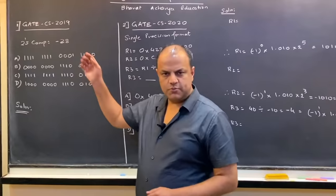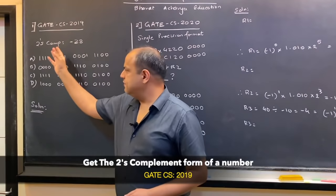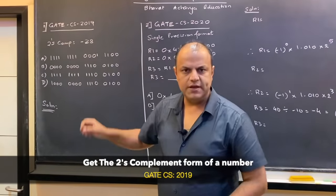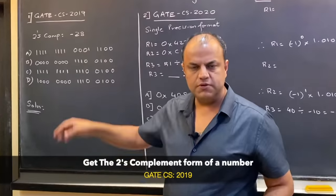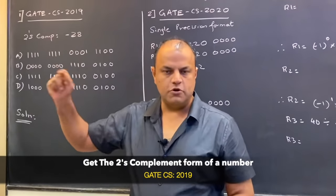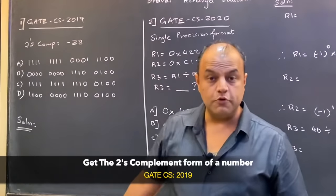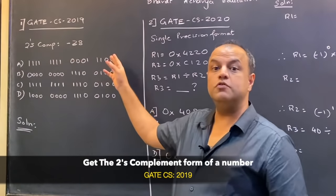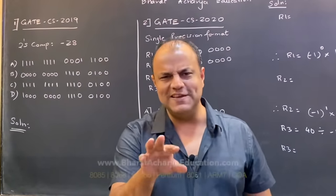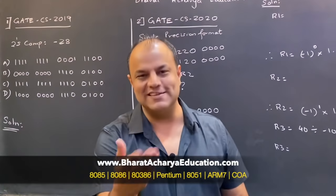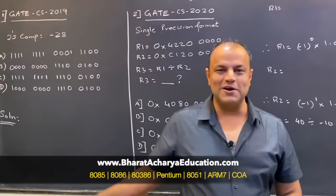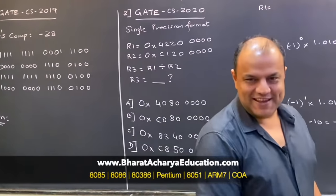Our first question, which came in 2019, gives you some number — 2 to the power of minus 28 — and asks you to get the two's complement form of this number. They've given you four options that are pretty similar to each other — that's how they try to confuse you. I'm going to show you how to do it.